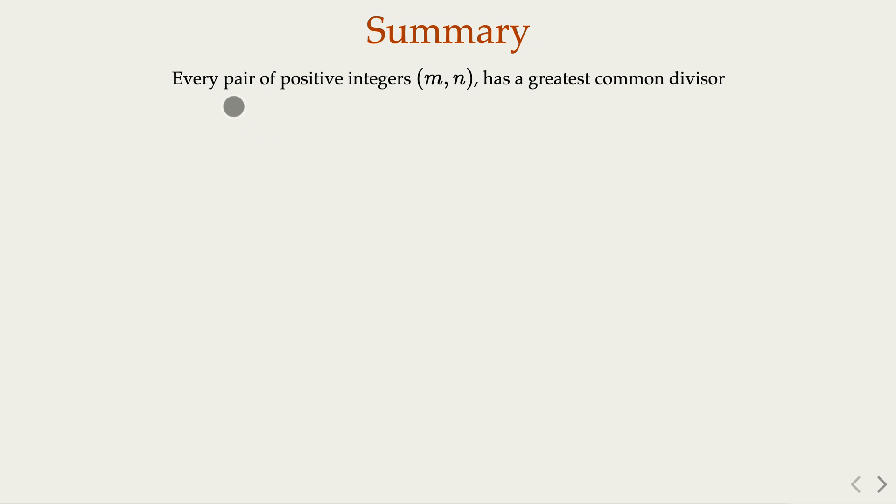So in other words, we have proved the fact that every pair of positive integers m, n must have a greatest common divisor, because we have shown how we construct that.